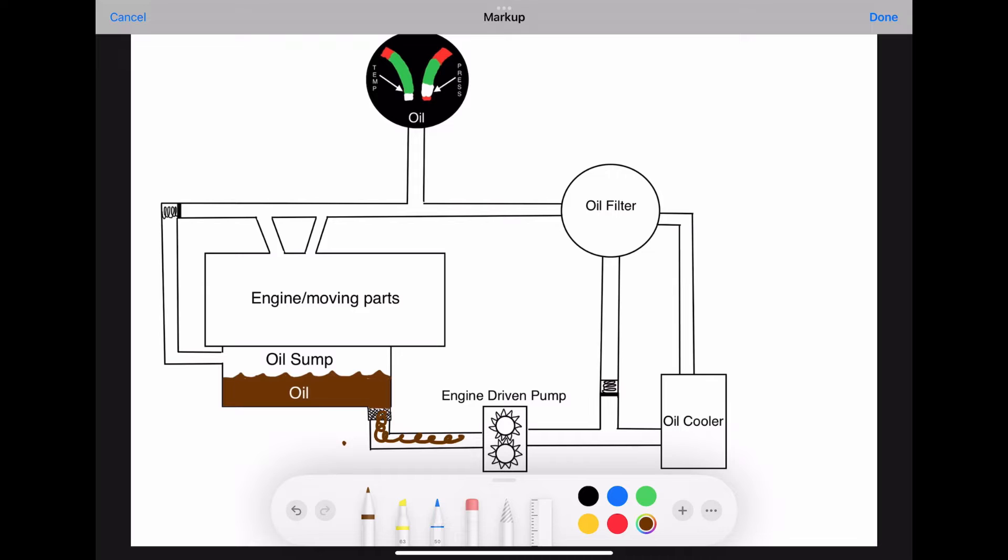it immediately runs into an engine-driven oil pump. And if the engine's not running, the pump is also not running. And this is where the oil would come to a stop. But as soon as the engine is set into motion, the pump is geared to spin with the engine and it'll begin to pump oil from the sump.